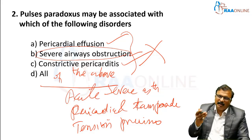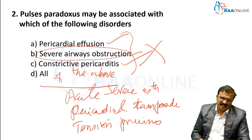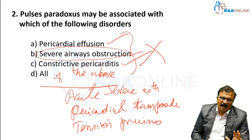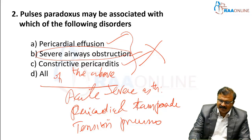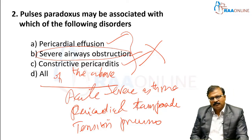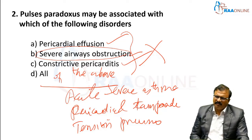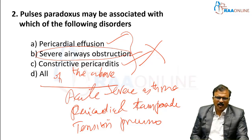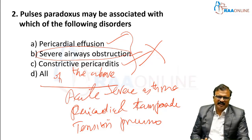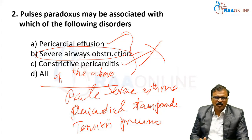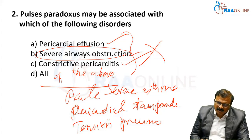Acute severe asthma is a life-threatening emergency. Normal pericardial effusion will not cause pulsus paradoxus; pericardial tamponade definitely causes it. Constrictive pericarditis will not produce pulsus paradoxus.